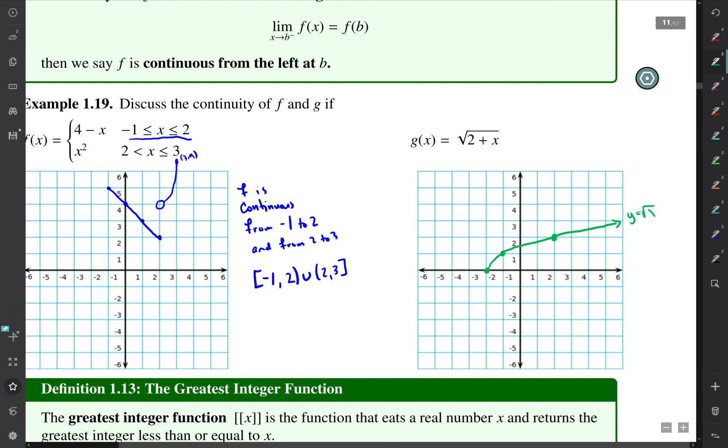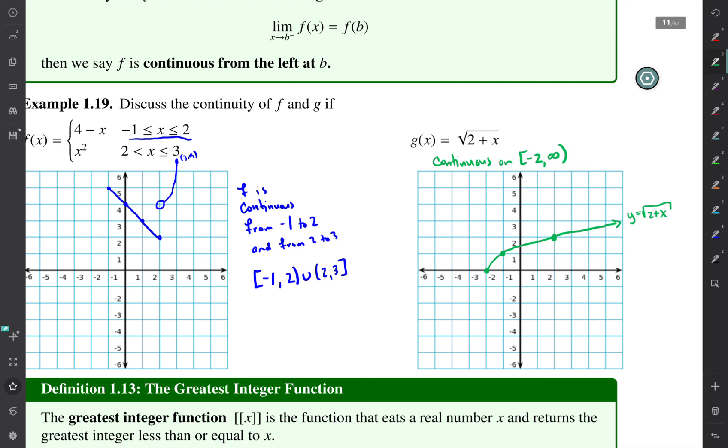And this is going to be continuous everywhere where the function is defined, and so it's continuous on the interval from negative 2 all the way up to infinity. So it's continuous on negative 2 to infinity, and we don't use a closed bracket at infinity because you can't actually include at that point.